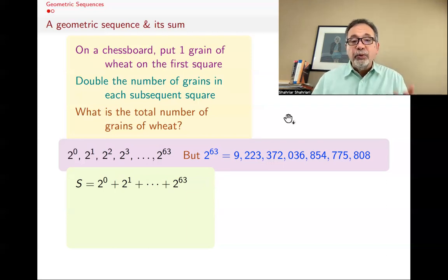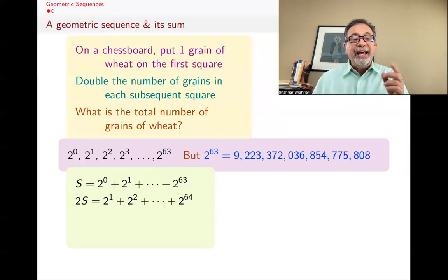There is a nice little trick that always works, that means you don't have to memorize any formulas. Because the common ratio was two, what we're going to do is multiply S by two. Multiply by two, two times 2^0 is 2^1. Two times 2^1 is 2^2. Two times 2^63 is 2^64. So that's what it is.